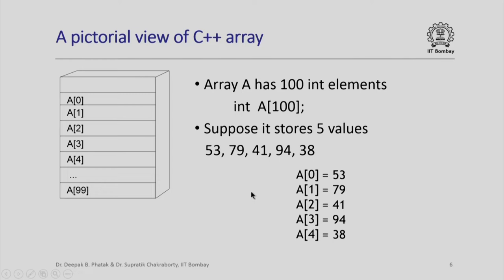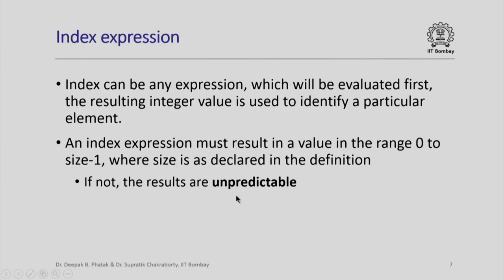At this point please also note that the value 100 appearing in the declaration is not an index, it is actually the size of an array. This is prescribed only once in the declaration. Subsequently whenever I write anything inside square brackets and associate the array name, it always means a particular element of the array. The index can be any expression that is first evaluated and the resulting integer value is used to identify a particular element.